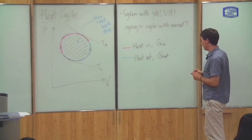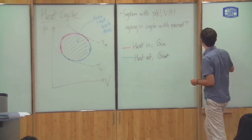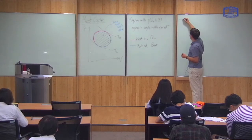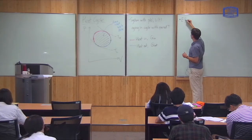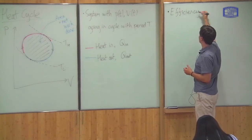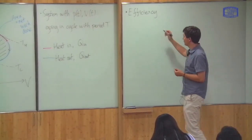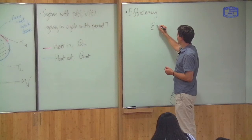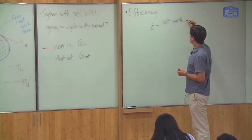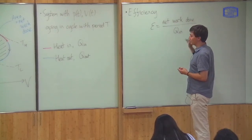There's one final important thing to define — and this is because it's on the quiz this week. There is something known as the efficiency, given the symbol epsilon. It's defined as the net work done in the system divided by the amount of heat you have to put in.